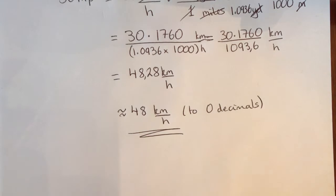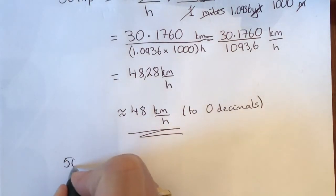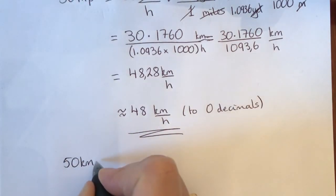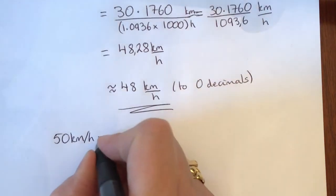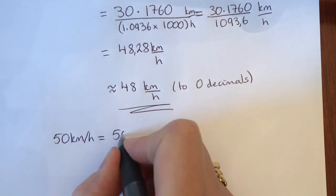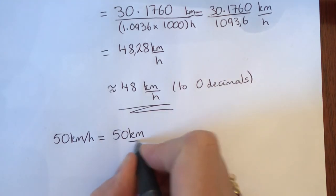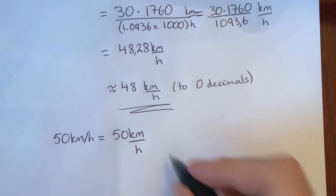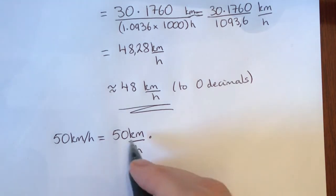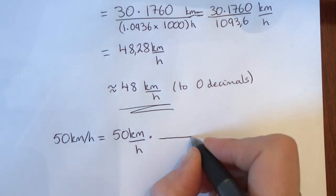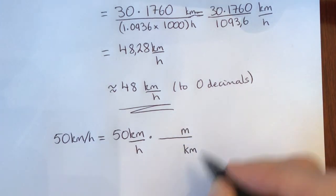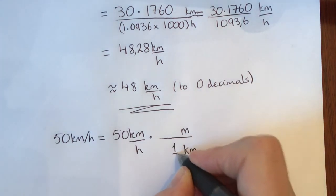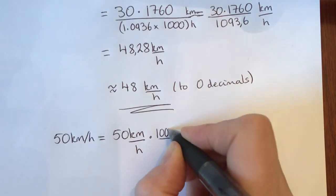Let's go back and try the reverse. Let's say we have 50 kilometers per hour and we're wondering how many miles per hour that would be. We write it as 50 kilometers per hour. What we'd like to do is get rid of kilometers and change it to meters. We know that one kilometer is the same as 1000 meters.